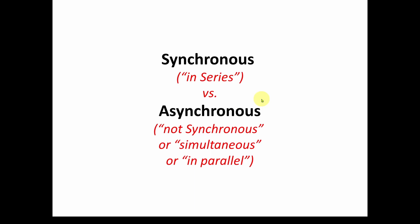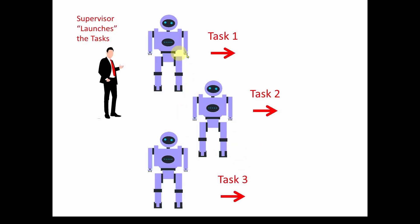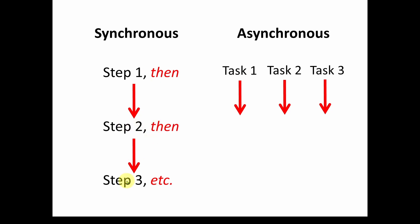What we've talked about involves two basic concepts: synchronous and asynchronous. Synchronous means in series — you do one task, when that's done you do the next, and when that's done you do the next. Asynchronous — the 'A' means not synchronous — could also be described as simultaneous or parallel. You have multiple robots all doing things simultaneously. Synchronous: step one, then step two, then step three. Asynchronous: you do all of these simultaneously.